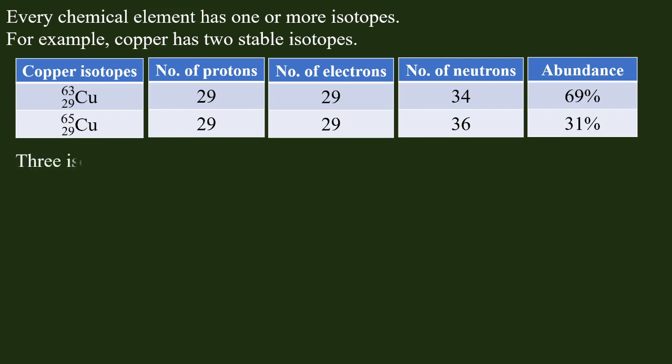There are about three isotopes of hydrogen. One of them is hydrogen with a mass number of 1, written as 1H1.